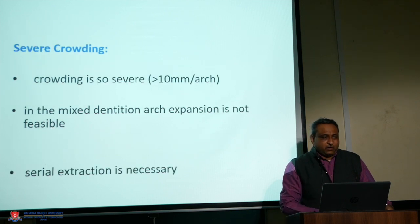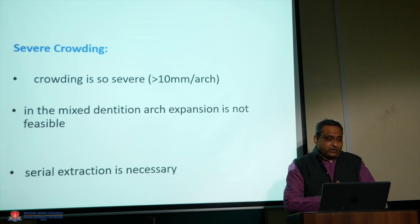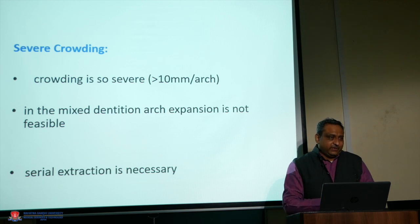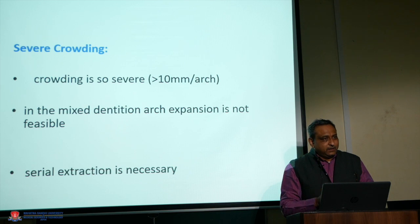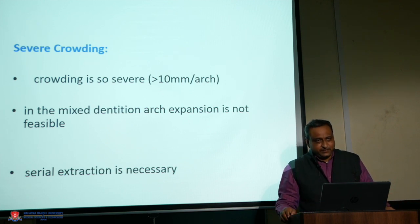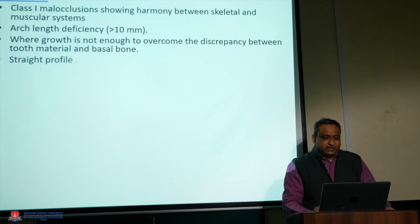For severe crowding — more than 5 mm but less than 10 mm per arch — you proceed with extraction procedures. First, perform proper space analysis to determine the space deficiency, and then decide whether to go with proximal slicing, arch expansion, or serial extraction procedures.